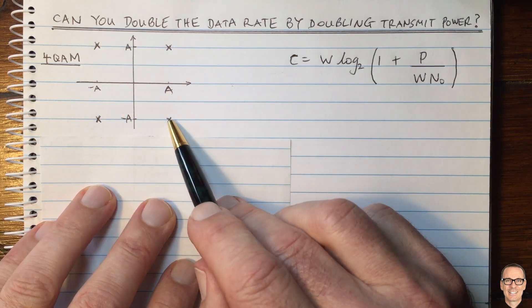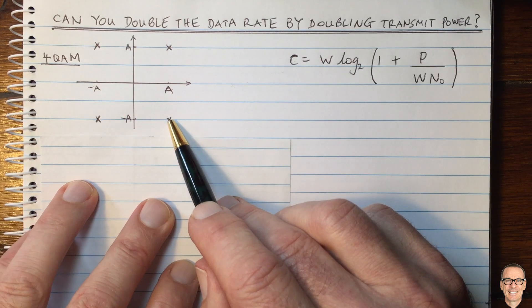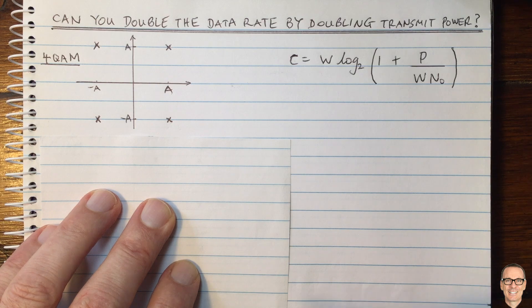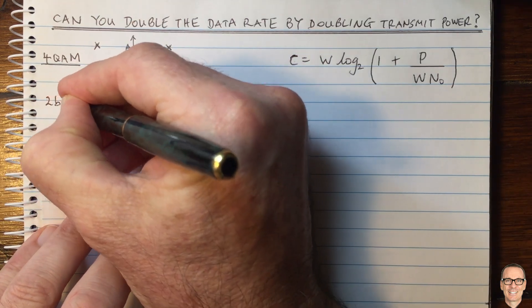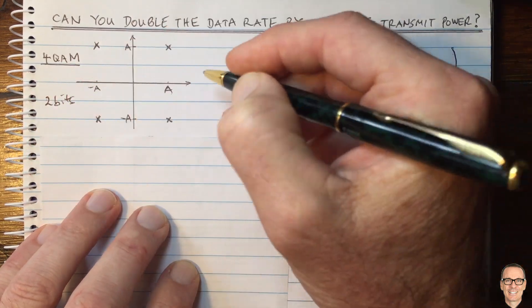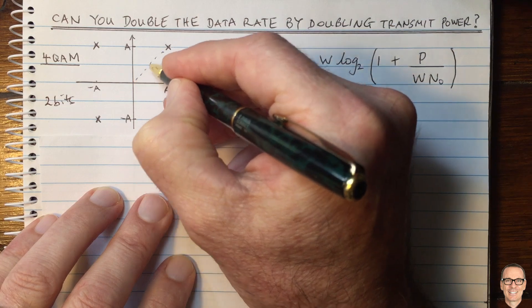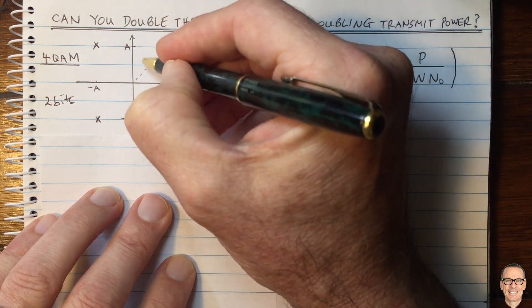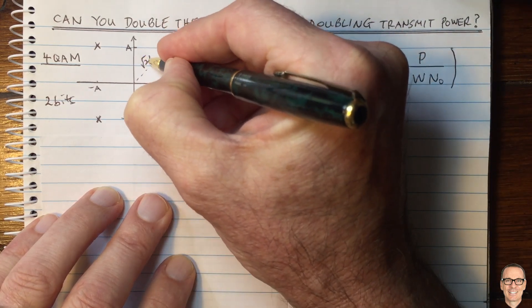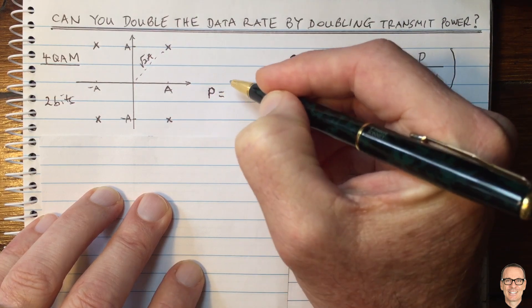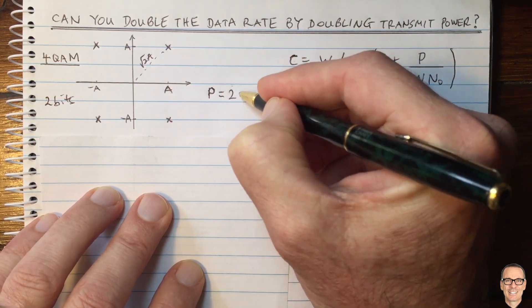When we have four constellation points, that means we can represent two bits. So here we've got two bits, and the power here is found by taking the square of this distance here. This is square root of two times a, so the power equals two a squared.